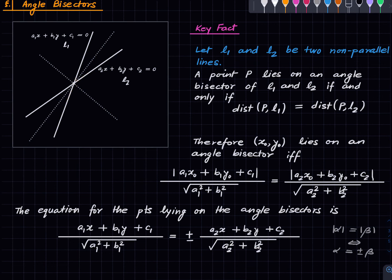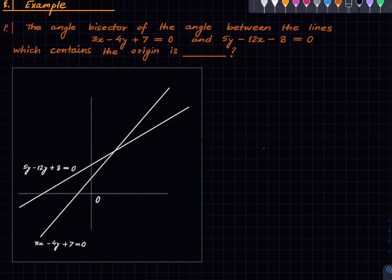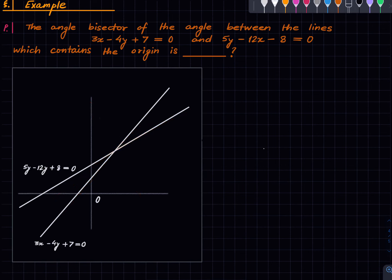Generally it is of interest to identify which bisector we are talking about. For example, suppose the origin is in a certain region and we want the angle bisector that bisects the angle containing the origin — which sign do we choose? We will illustrate this by means of an example. Even though I have drawn a figure, I will not use it to solve the problem; the figure is for explanatory purposes only. We want a solution that does not depend on reading a diagram.